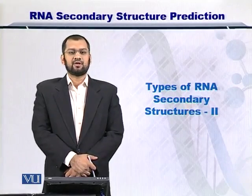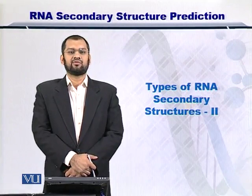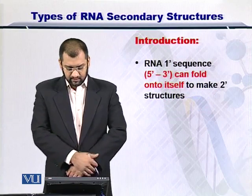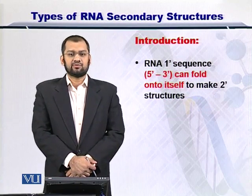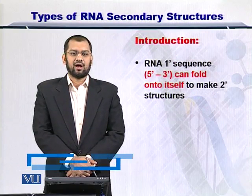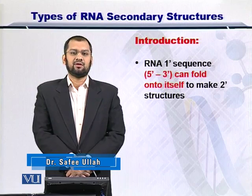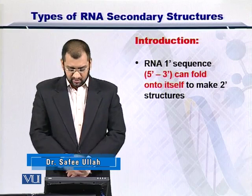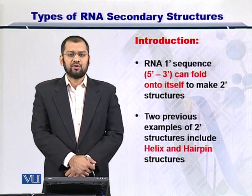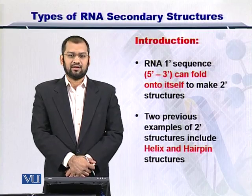Dear students, let's take a look at the other types of RNA structures that can be formed as a result of this folding process. The folding, just to remind you, is essentially the 3' end of the RNA molecule coming towards the 5' end, and the intermediary regions making hydrogen bonds with the complementary bases. The two previous examples we have studied are the hairpin loop and the helix.